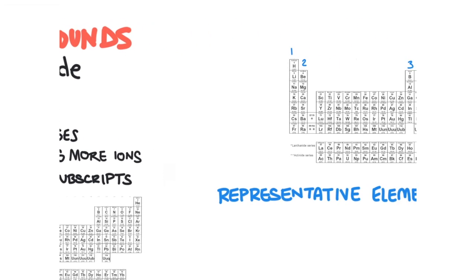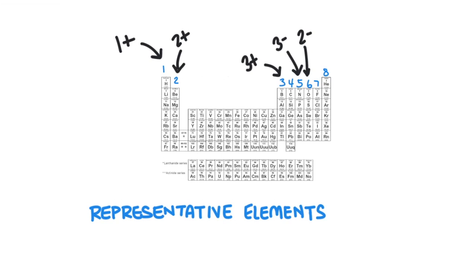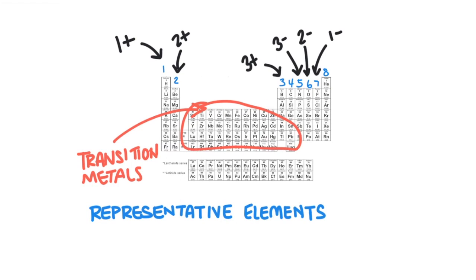It's easy to determine the charge of a representative element. Group 1 is +1, group 2 is 2+, and group 3 is 3+. Group 4 will generally not form ions, so we'll skip them. Group 5 will have a 3 minus charge, group 6 will have a 2 minus charge, and group 7 will have a minus 1 charge. Group 8 are the noble gases — they will not form ions. So why did we skip over the middle section? Well, these are the transition metals, and they don't follow this pattern to determine their charges.